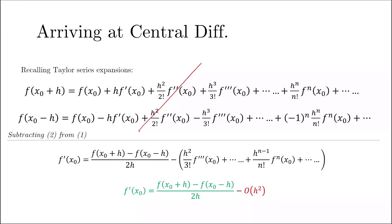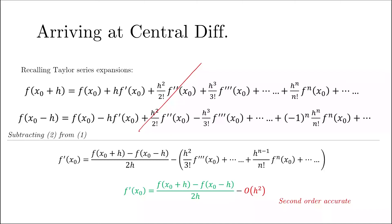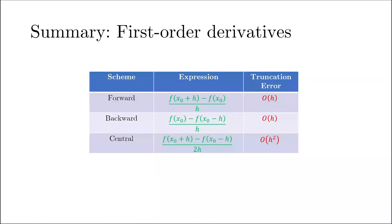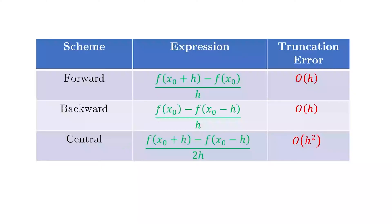When we truncate this series and write it in compact form, we get the first order derivative where the truncation error is now of order h squared. This formula uses x0 plus h and x0 minus h — it uses the points surrounding x0. That is why this scheme is called the central differencing scheme. Graphically, we are getting contributions from the two neighboring points in a one-dimensional system. To summarize: we have three differencing schemes, with truncation errors of order h for forward and backward differencing, and order h squared for central differencing.